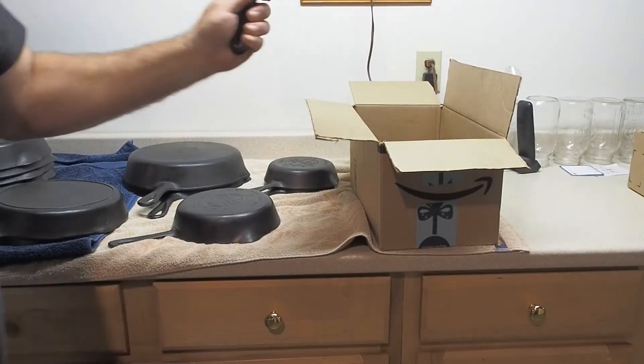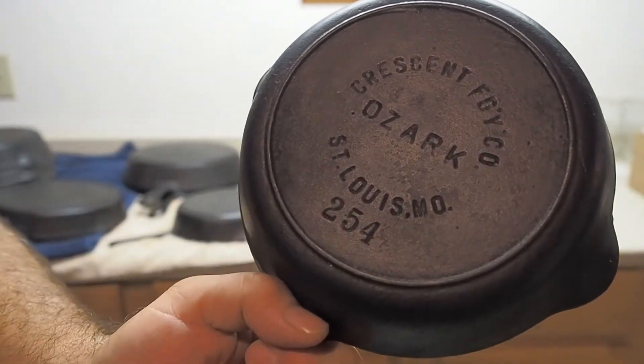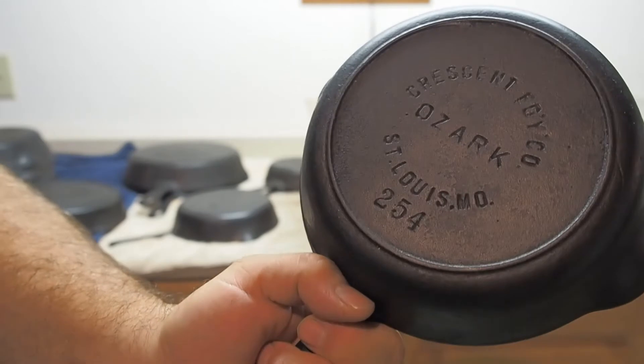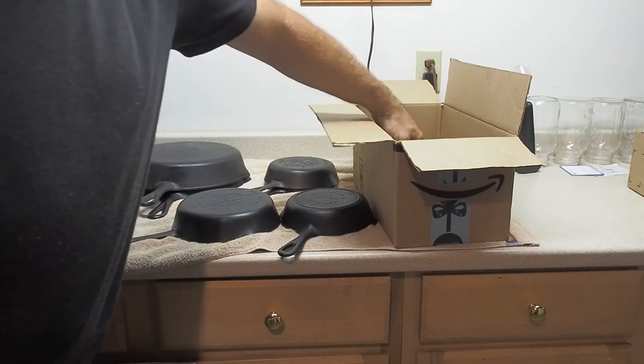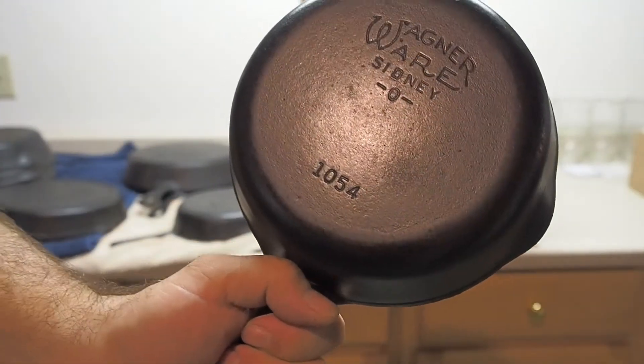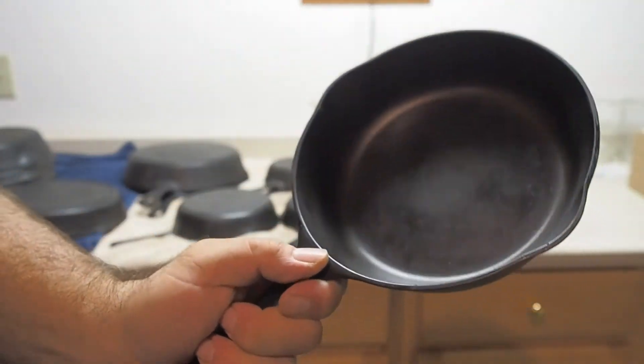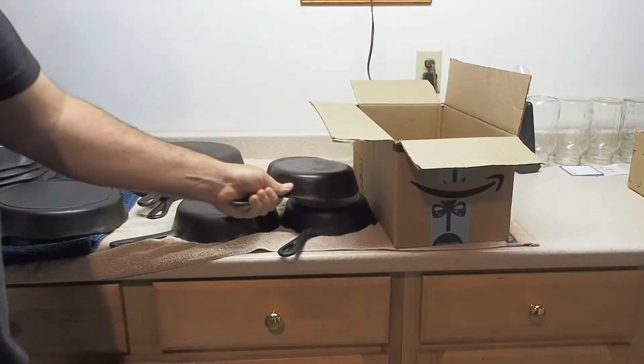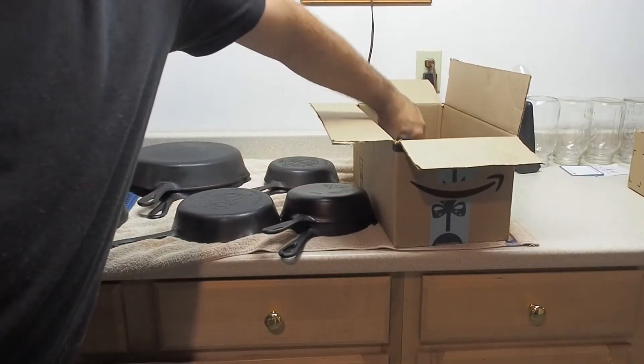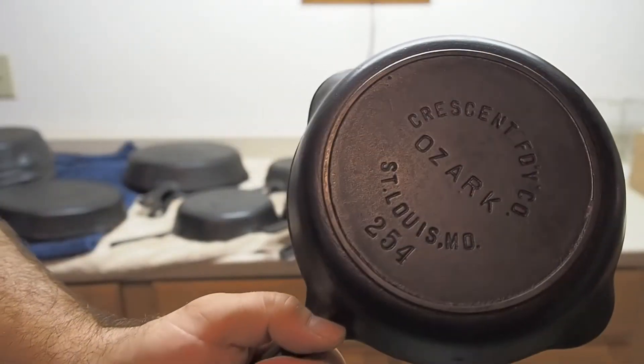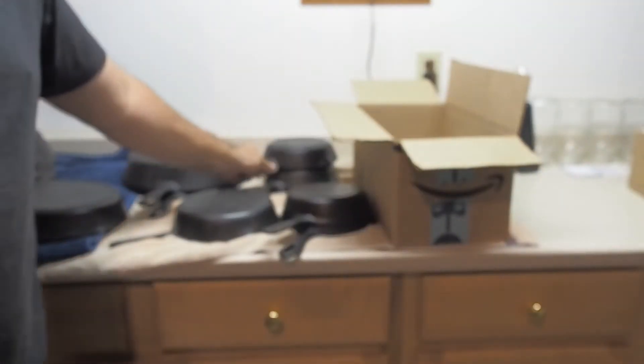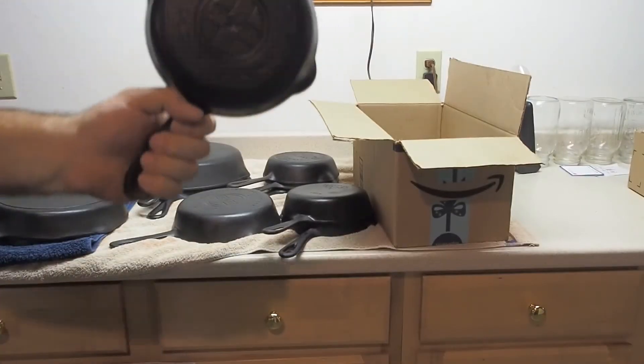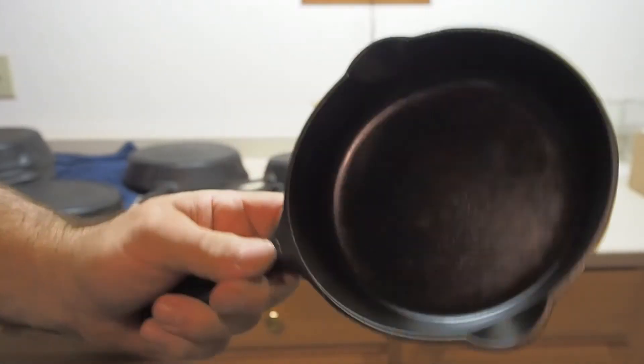Here's kind of an unusual, well, not unusual, but the Ozark number four. They're fairly common around Missouri. Kind of a regional brand. And we've got number four, Wagner, smooth bottom. And we've got another number four, Ozark. Number three, Griswold.